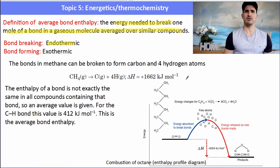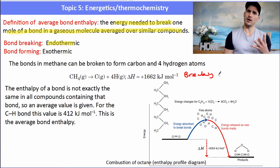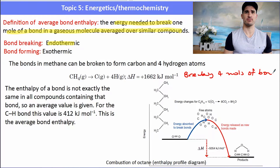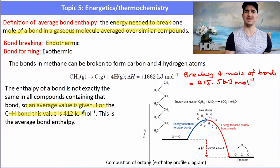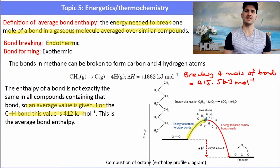Looking at the equation, four moles of C–H bonds have been broken in methane, which has taken 1662 kJ. If we divide that by four, we get a bond enthalpy of 415 kJ/mol. However, that is not what's specified in the data book because that is just the bond enthalpy of methane — it hasn't been averaged over a number of similar compounds.